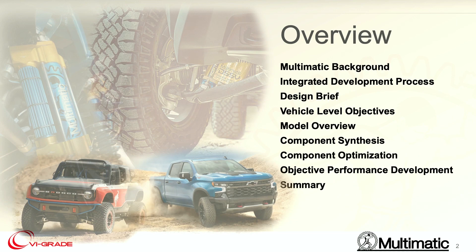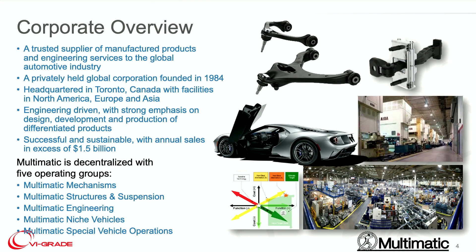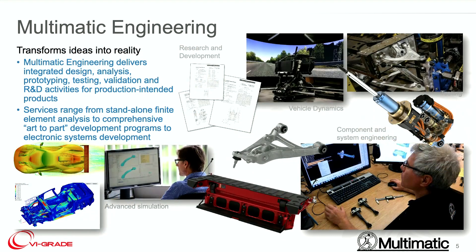To start off with, we're going to do a bit of a background about Multimatic. We are a global company supplying automotive parts to the automotive industry. We have been around since 1984, and one of the key things with Multimatic is that we're very technology and engineering driven — always looking for more effective ways to do things, always looking to push the limits of technology. We have five main operating groups: mechanisms, structure and suspension, niche vehicles, special vehicle operations, and the group we're talking about today — Multimatic Engineering. That's the group that we're a part of.